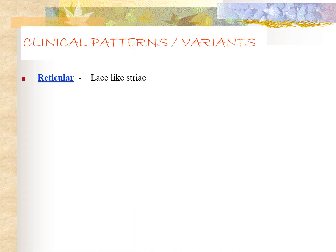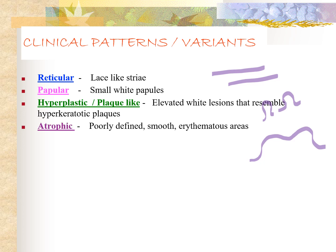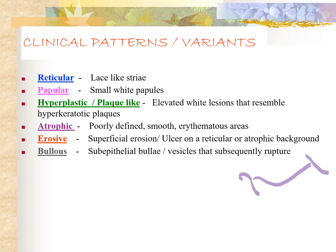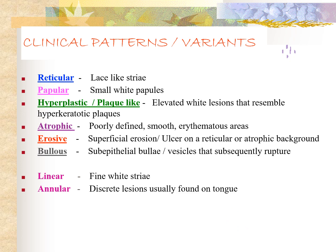There are eight clinical patterns of lichen planus. The most common is reticular, where we see Wickham's striae. Then papular — elevated small white papules. Hypertrophic — papules fuse to form plaque-like areas. Atrophic — epithelium thickness is reduced, clinically appearing as red areas. Erosive — superficial ulcers with reticular lines at the periphery. Bullous — fluid-filled elevated lesions. Linear — straight lines appearance. Annular — round ring-like lesions, usually seen on the tongue.